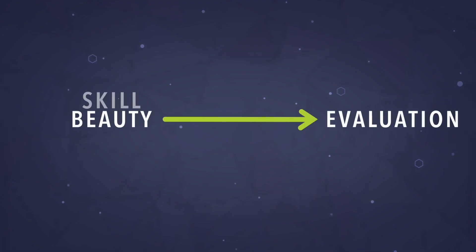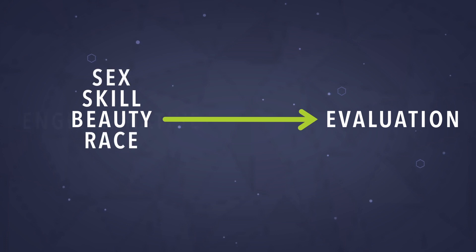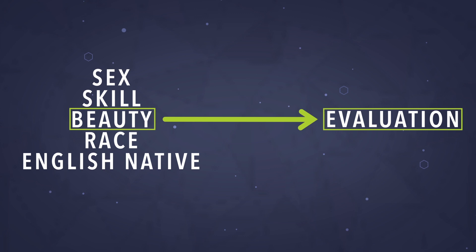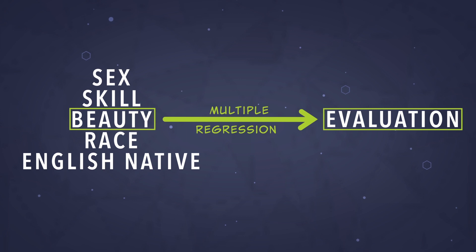And what if there were other important variables that affect both beauty ratings and evaluation scores? You might want to add considerations like skill, race, sex, and whether English is the teacher's native language to isolate more cleanly the effect of beauty on evaluations. When we get into multiple regression, we will be able to measure the impact of beauty on teacher evaluations while accounting for other variables that might confound this association.